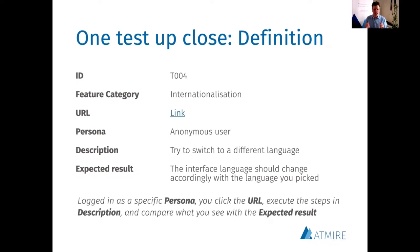These six columns together are the test definitions. Right now, if you go to the plan, you will notice that you are not able to edit these six columns. But if you are interested in contributing more test definitions, you can do this via Google Sheet access requests, and we are happy to give more people permissions to write additional tests.